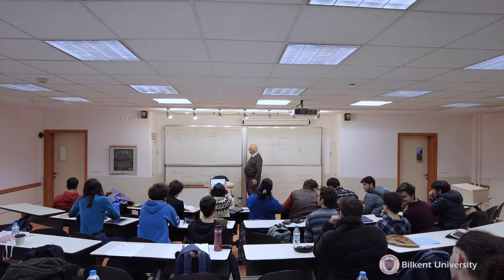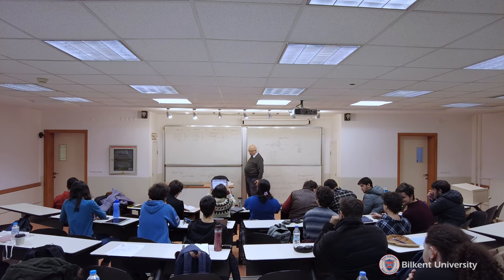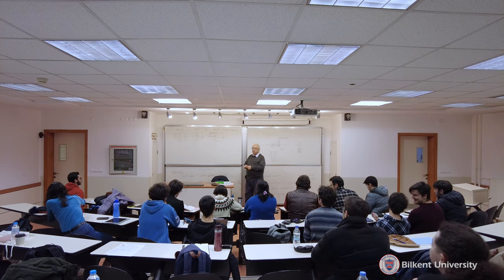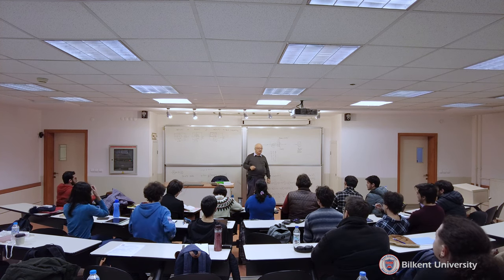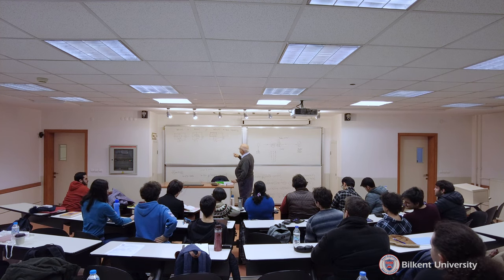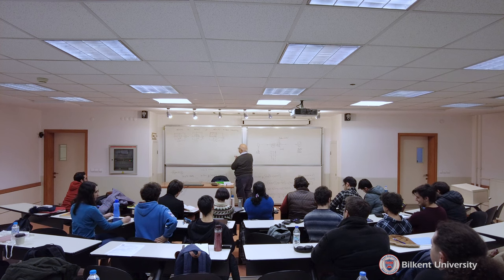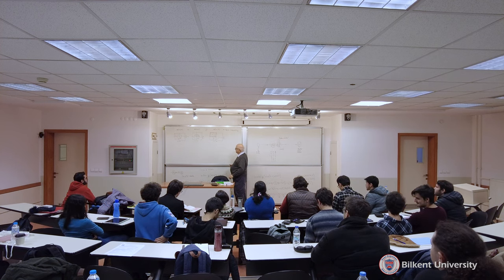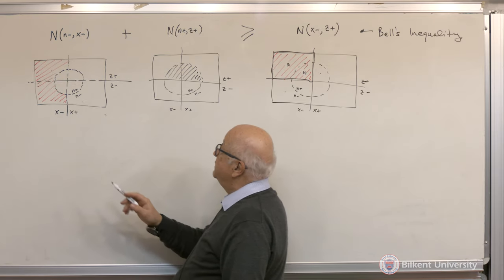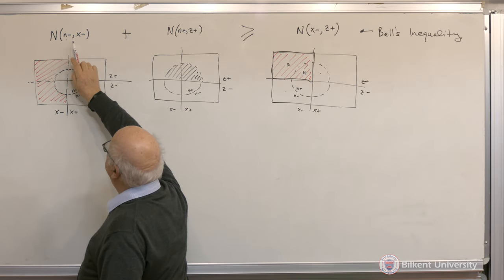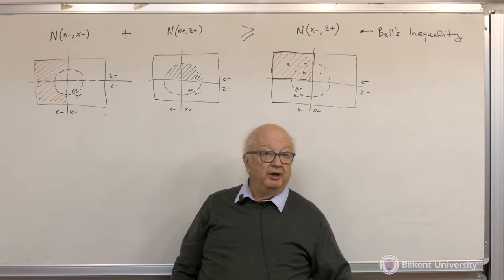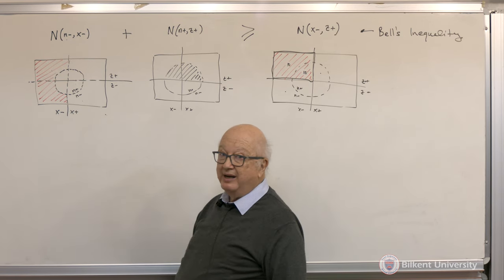How would we actually count these particles? How would we get the numbers that we have over here? For example, here we want to count particles that have n-minus and x-minus.